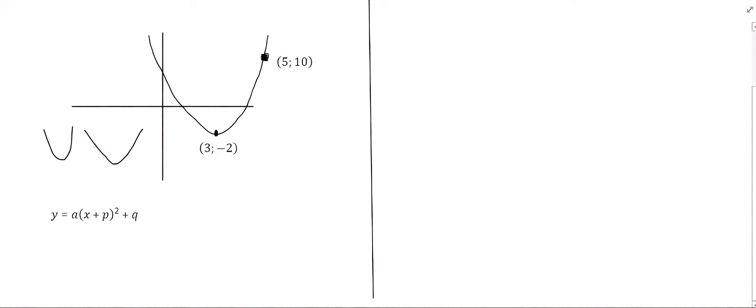To determine the shifts of this graph, we need to remember that an original parabola always starts at coordinates (0, 0) for the turning point. This graph's turning point is at (3, -2), which implies the graph has been shifted 3 units to the right and 2 units down. That means the bracket should say x minus 3, and q would have to say minus 2.